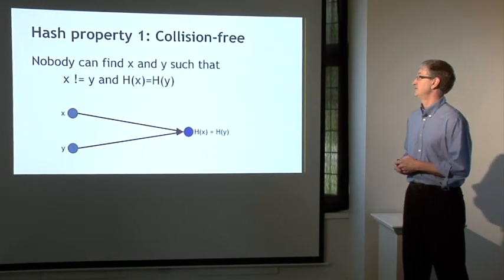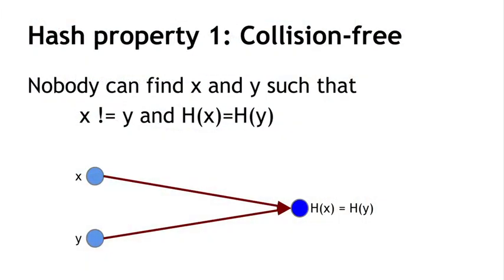So first, collision-free. The first property that we need from a cryptographic hash function is that it's collision-free. What that means is that it's impossible — nobody can find values x and y, such that x and y are different, and yet the hash of x is equal to the hash of y. If we look at the operation of the function as depicted by one of these red arrows, here's x and h(x), and here's y and h(y), then nobody can find a situation where you have an x and y that are separate, and yet when you hash them, they hash to the same value.